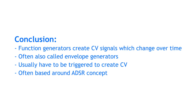Function generators create CV signals which change over time. They are often also called envelope generators. In order to start their CV generation they usually have to be triggered. Function generators are often based around the attack, decay, sustain, and release concept.